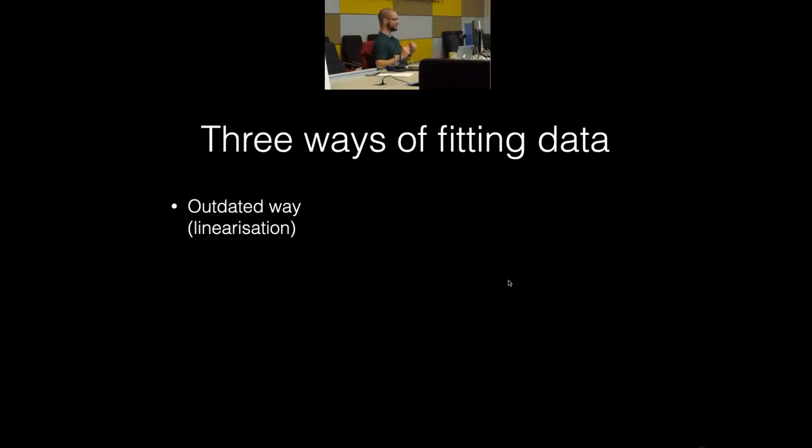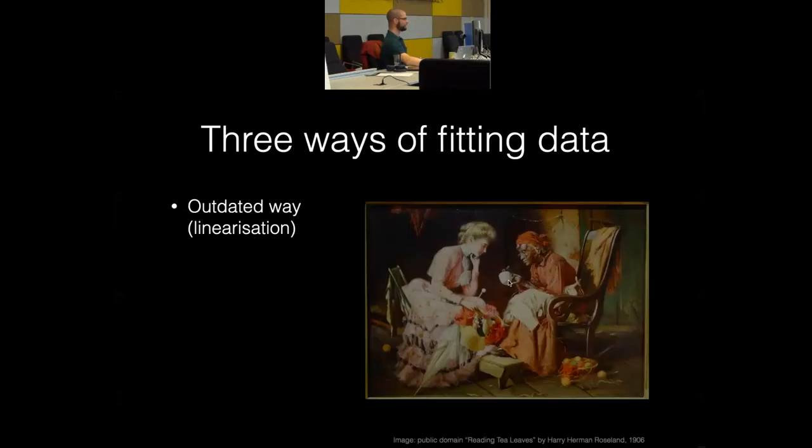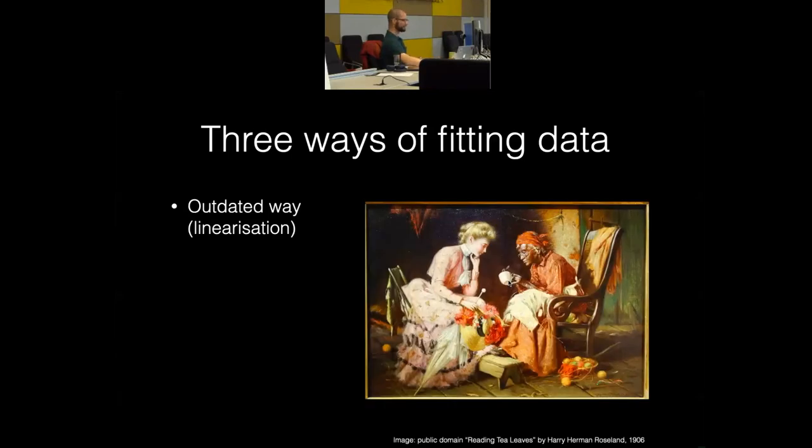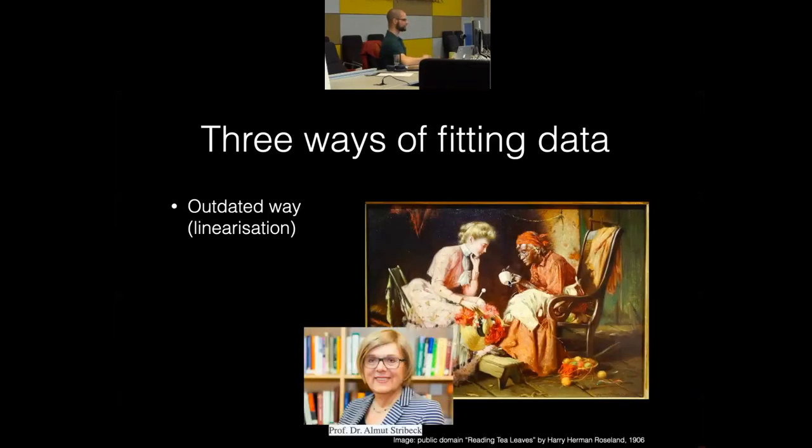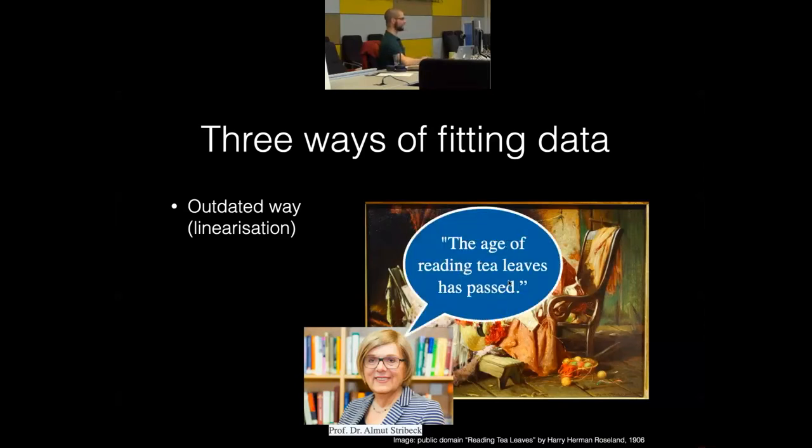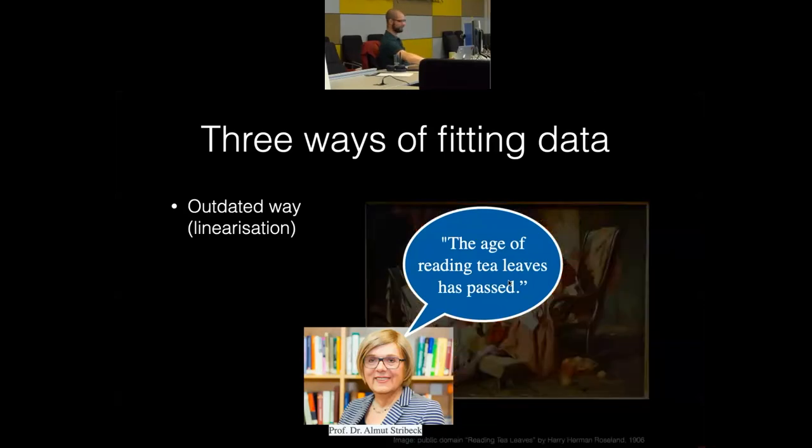This is where you transform your data by taking, for example, the logarithm of the intensity and then taking Q squared. And then you should end up with a linear region somewhere which you can try and describe. Now, this has been likened by Professor Almut-Strubeck as reading tea leaves. And, of course, the age of reading tea leaves has passed.